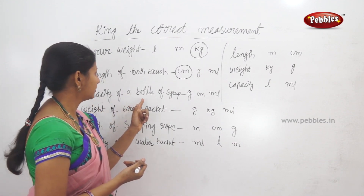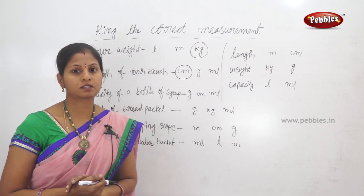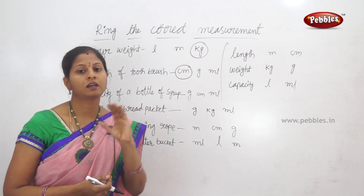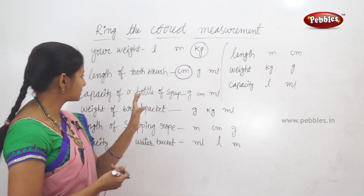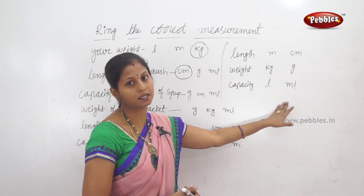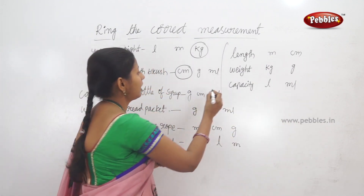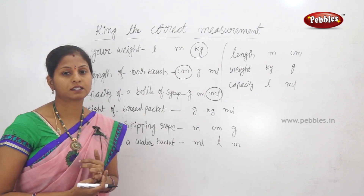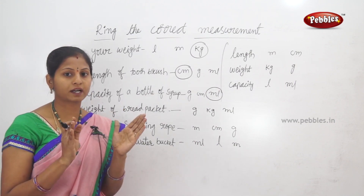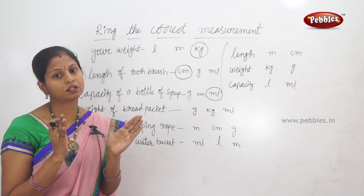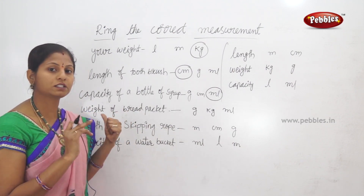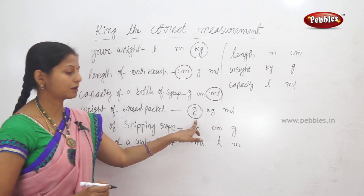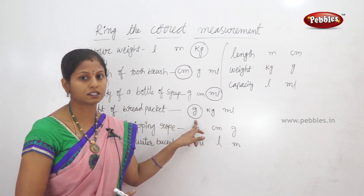Next example: capacity is a bottle of syrup; weight of a bread packet. We measure the amount of syrup. For the bread packet, it has less weight. Weight is grams and kilograms. If there is less weight, we measure in grams. The bread packet has less weight, so we circle grams.